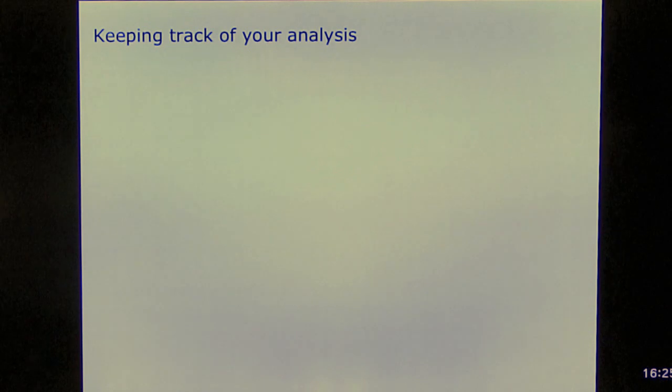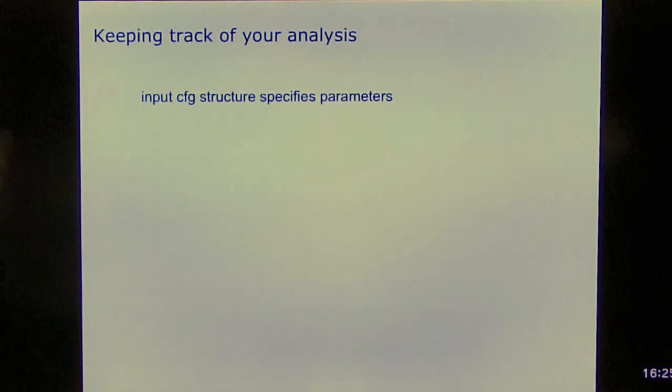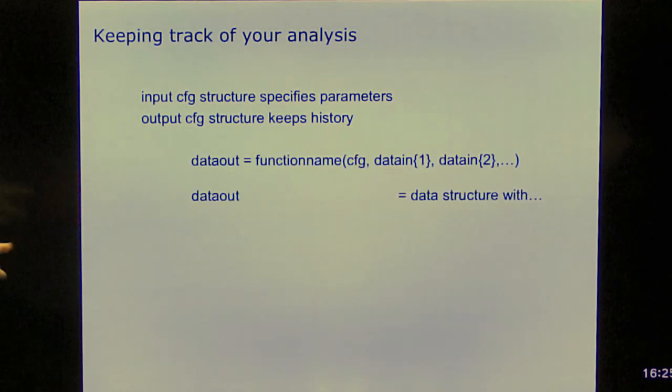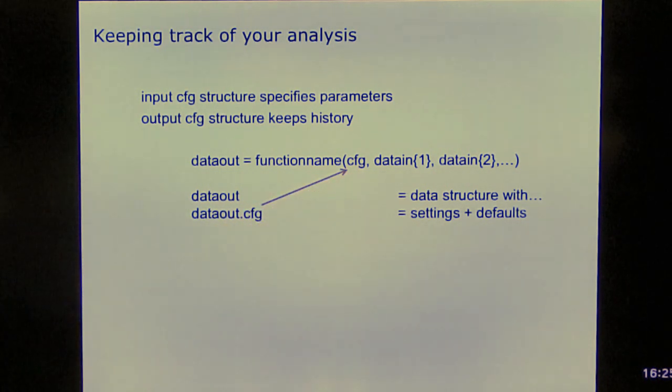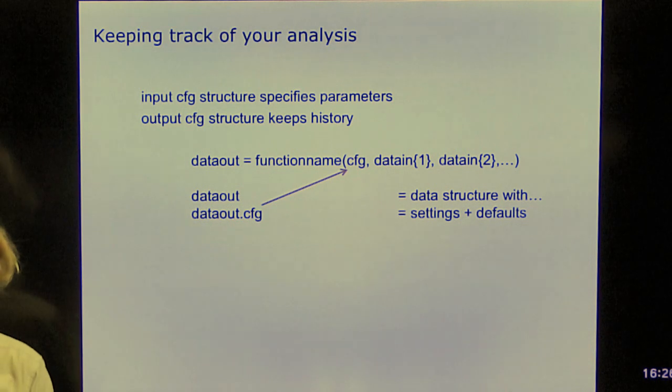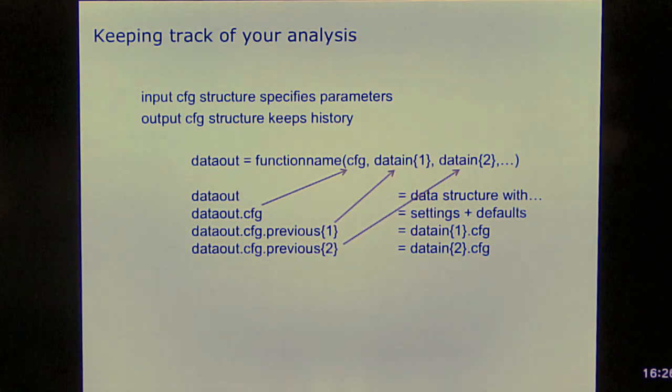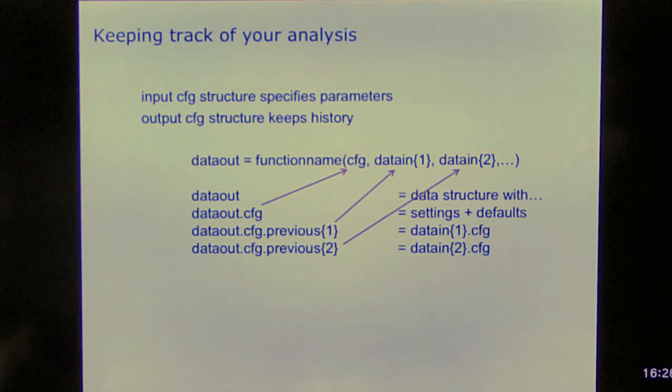Keeping track of your analysis is, of course, important. You spend a lot of time doing the analysis, and you write scripts, but scripts might change over time, and that's why FieldTrip keeps track of it. You specify the input configuration to each of the functions. The output configuration is present in each of the data structures. So if you look at such a function call, then data out is the data structure with, of course, the results of the computation, but it also has the configuration. And this configuration is the one that you specified here, including the parameters that you've chosen, but also including the parameters that are the defaults of this function. So that means that if you want to really know what the function has been doing, you look in the output configuration for the details. Furthermore, each of these input arguments has its own configuration. Those are also kept with the data.